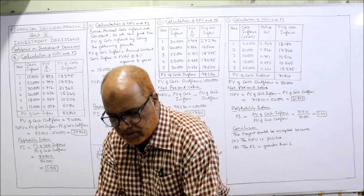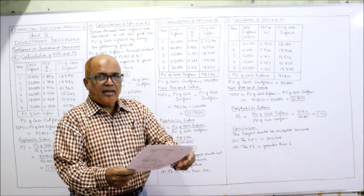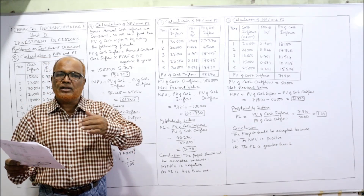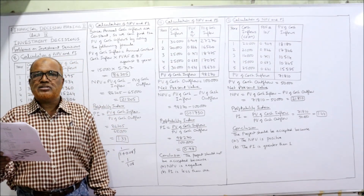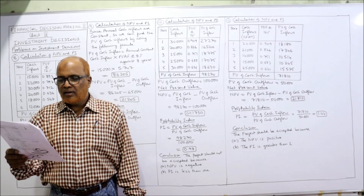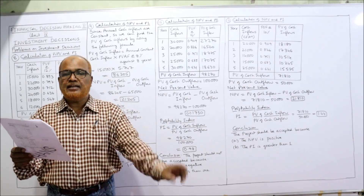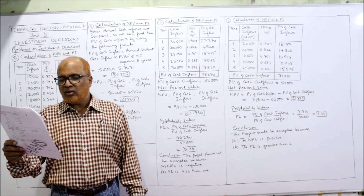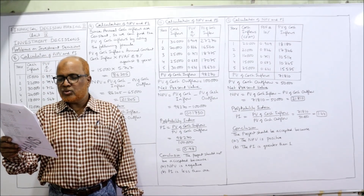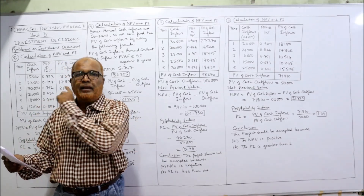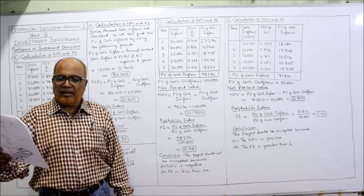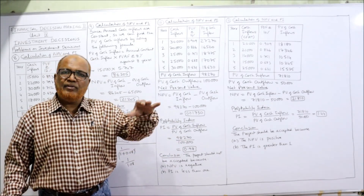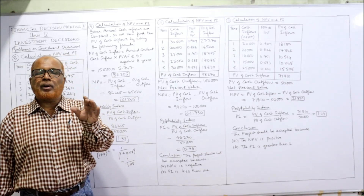Problem number 11: A company is considering an investment proposal to install a new milling machine. The project will cost 50,000 (cash outflow). The facility has a life expectancy of 5 years with no salvage value. The estimated cash flows after tax (CFAT) from the investment are: year 1 — 20,000, year 2 — 21,000, year 3 — 14,000, year 4 — 15,000, year 5 — 25,000. Cost of capital (Ke) is 10% per annum. Compute NPV and PI at 10%.